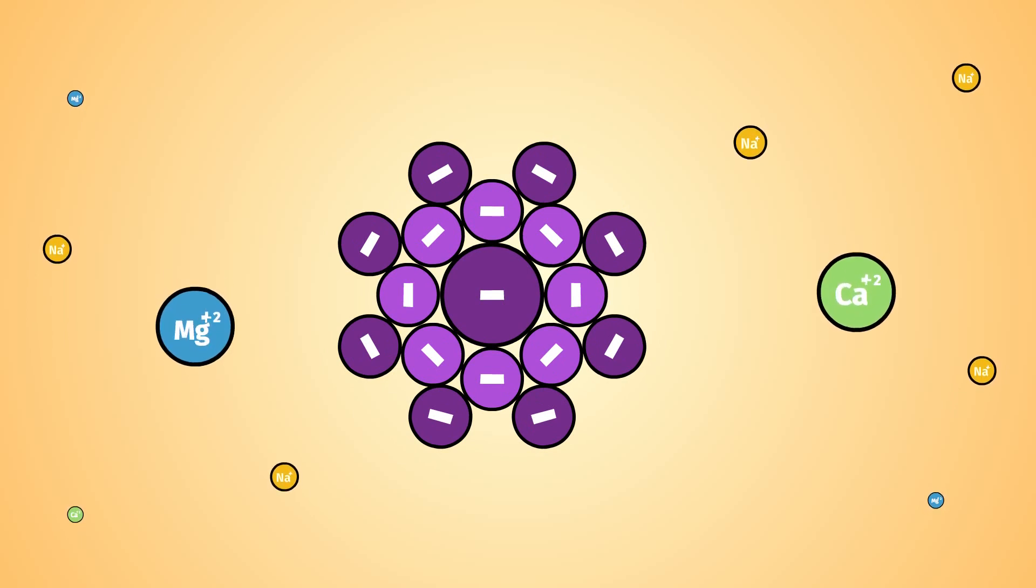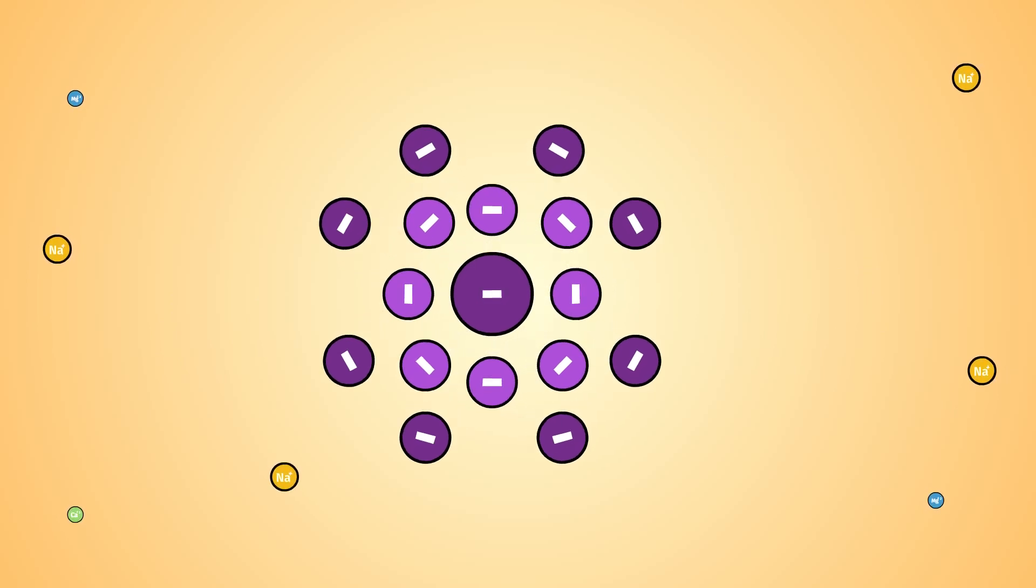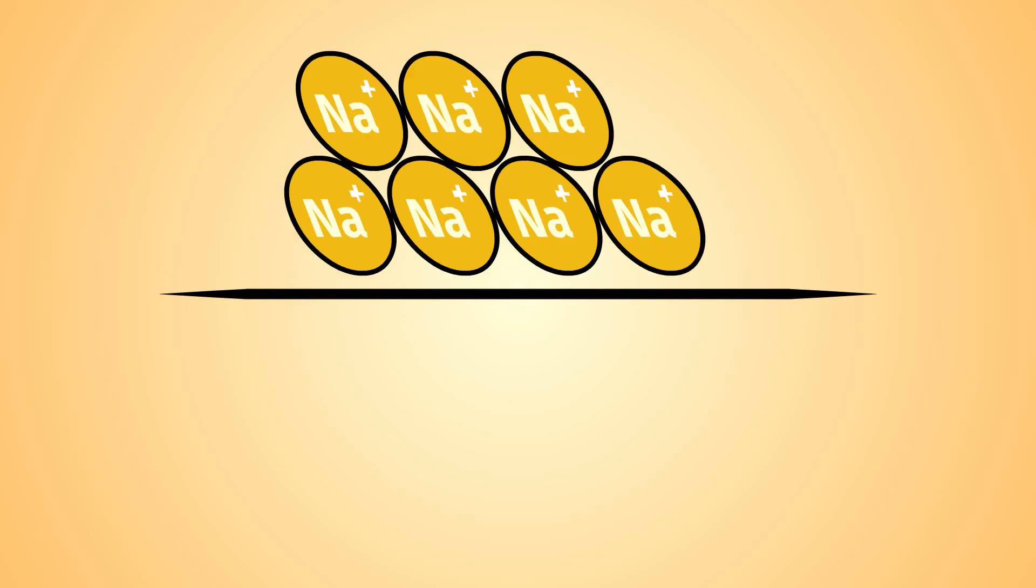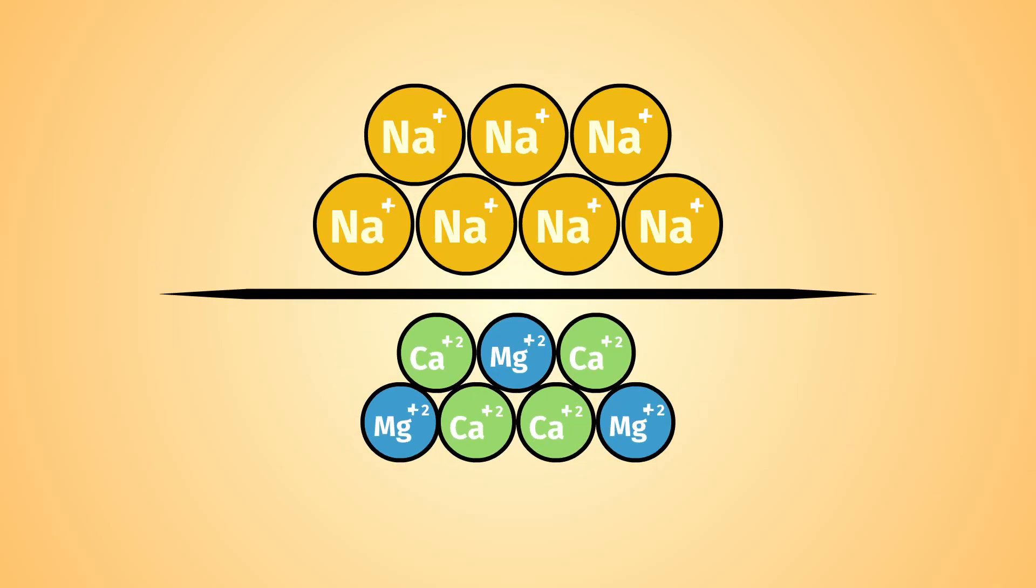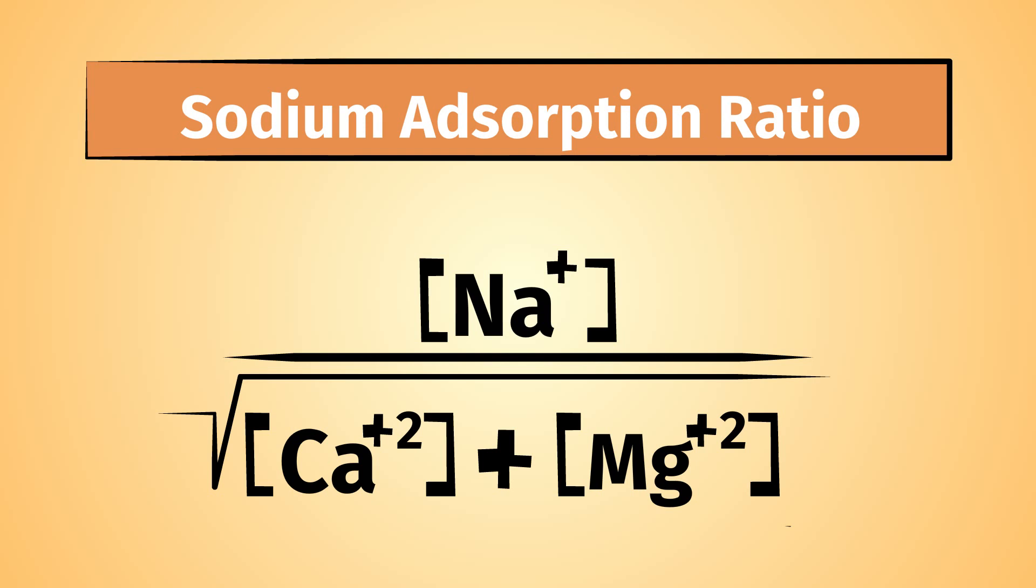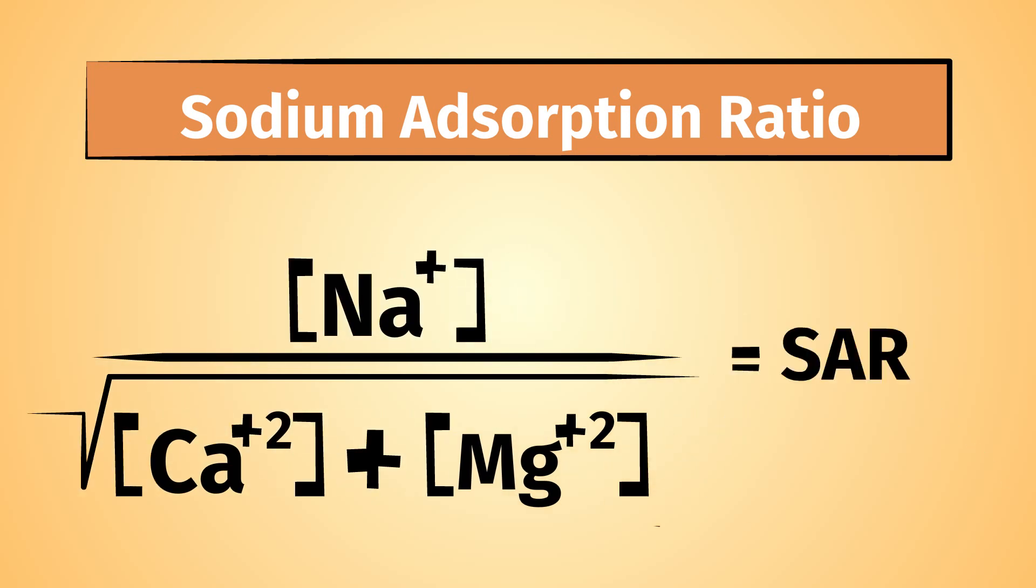Calcium and magnesium are good flocculators, while sodium is a poor flocculator, or can actually disperse the clay in soil. The ratio of bad to good flocculators is expressed as the sodium adsorption ratio, or SAR.